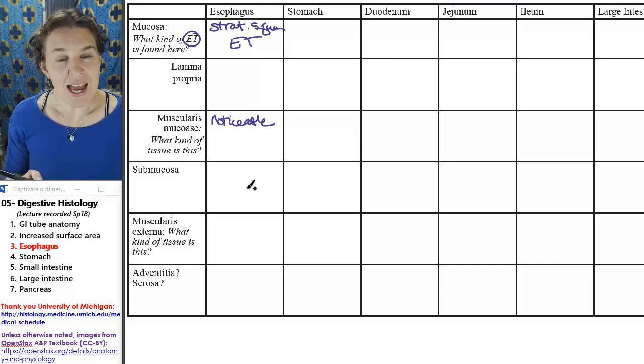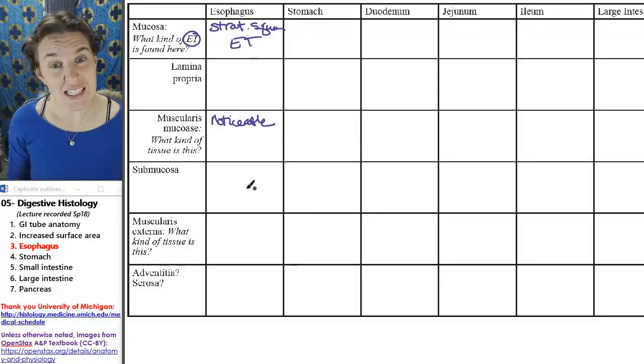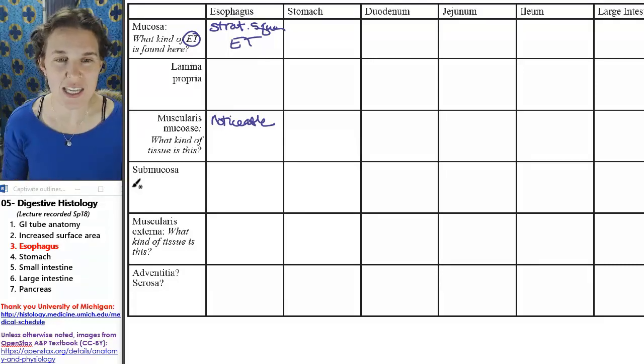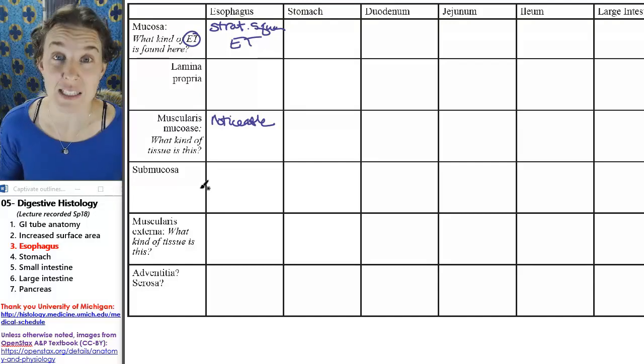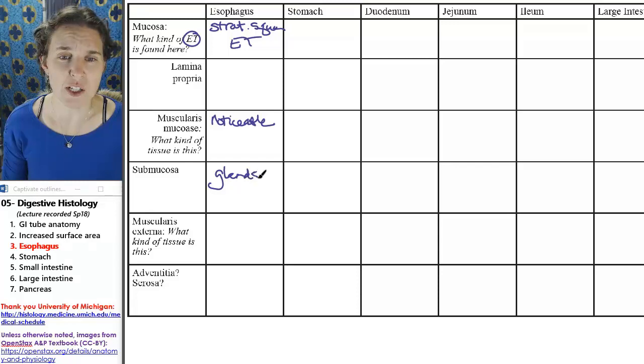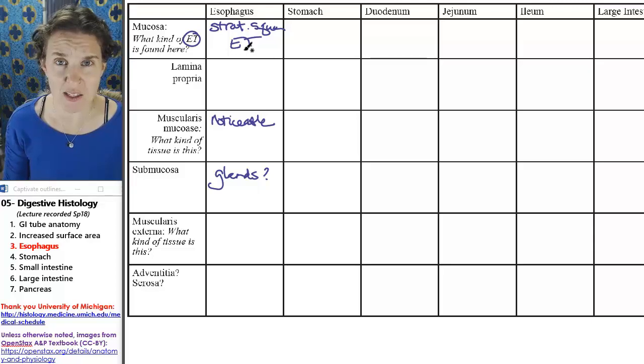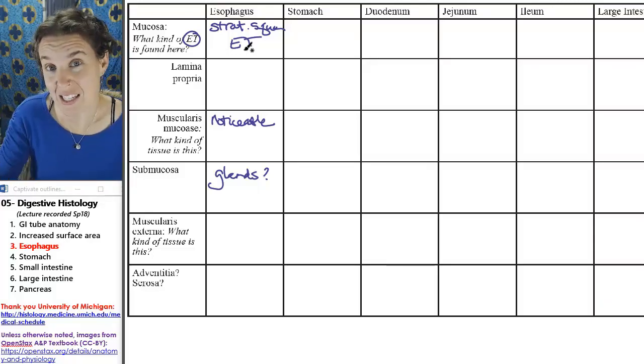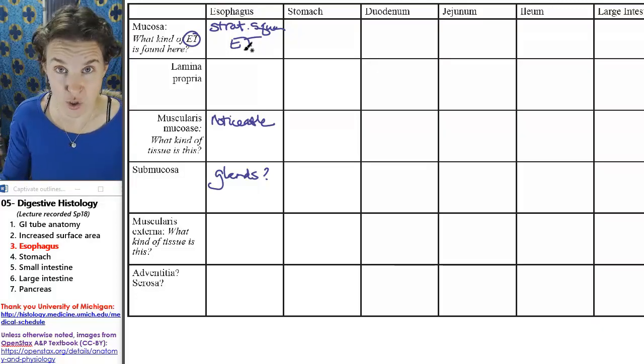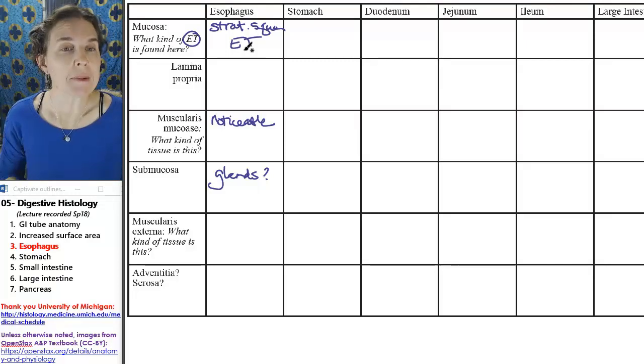In some parts of the digestive tube, the muscularis mucosa is difficult to find. Submucosa has some glands in it. You might find glands in the submucosa. But honestly, if you see stratified squamous epithelium, you're no longer asking yourself what part of the tube you're in. You know it's the esophagus.